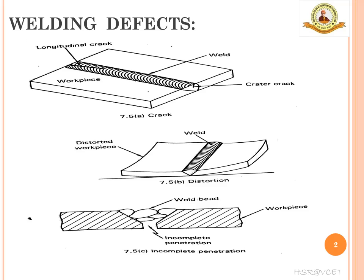The third defect is incomplete penetration. When the molten metal fails to penetrate the entire thickness of the base plate, it forms a bridge across the two plates, causing a defect in the weld — that is, the inability to fill the gap between two workpieces. This is called incomplete penetration. Some common causes are improper joint design, low welding current, low arc travel speed, and incorrect torch angles.